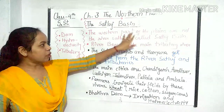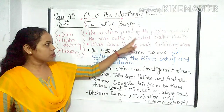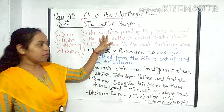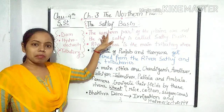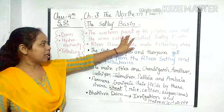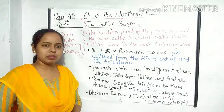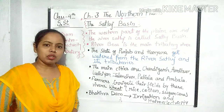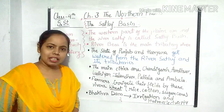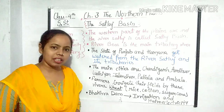The western part of the plains around the river Satluj is called the Satluj Basin. Satluj nadi ke kinare ka jo paschimi bhaag hai, use hum Satluj Basin ke naam se jaante hain. Satluj Basin ke western part mein jitna bhi plain area hai, use hum Satluj Basin ke naam se jaante hain.